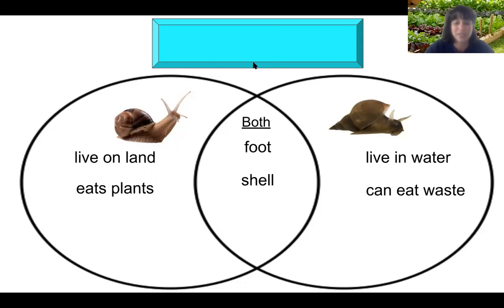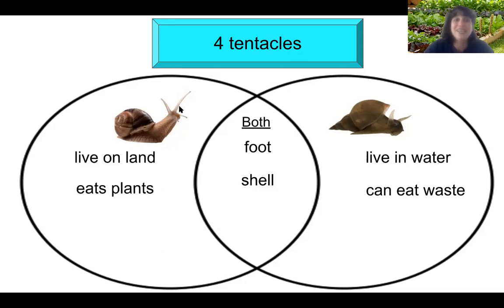Our next word: four tentacles. Which snail has four tentacles? Look closely — see if you can do a quick count. If you said land snail, you are correct. A land snail has four tentacles: two are really long and two are shorter. The two long ones have the eye stalks.